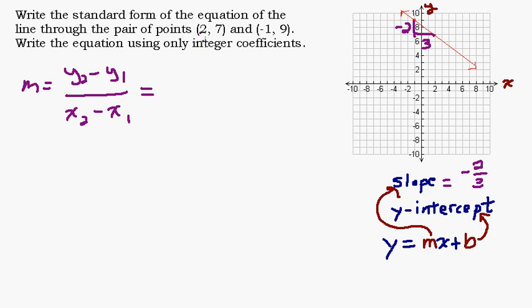So using that formula, we would be able to not have to worry about a graph. So we would just plug in these numbers here. You could use either one of these as your (x₁, y₁). It doesn't matter. I'll use this as (x₁, y₁), and then we'll make this other point (x₂, y₂). So y₂ - y₁ would be 9 - 7. And on the bottom, x₂ - x₁ would be -1 - 2, which gives us 2 over -3, which is the same as -2/3. So there's the algebraic way to find the slope without having the graph.